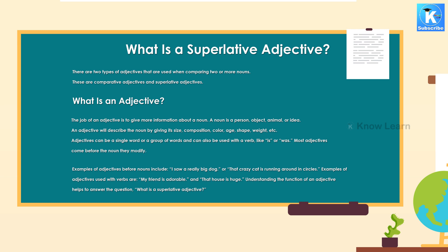What is an adjective? The job of an adjective is to give more information about a noun. A noun is a person, object, animal, or idea.